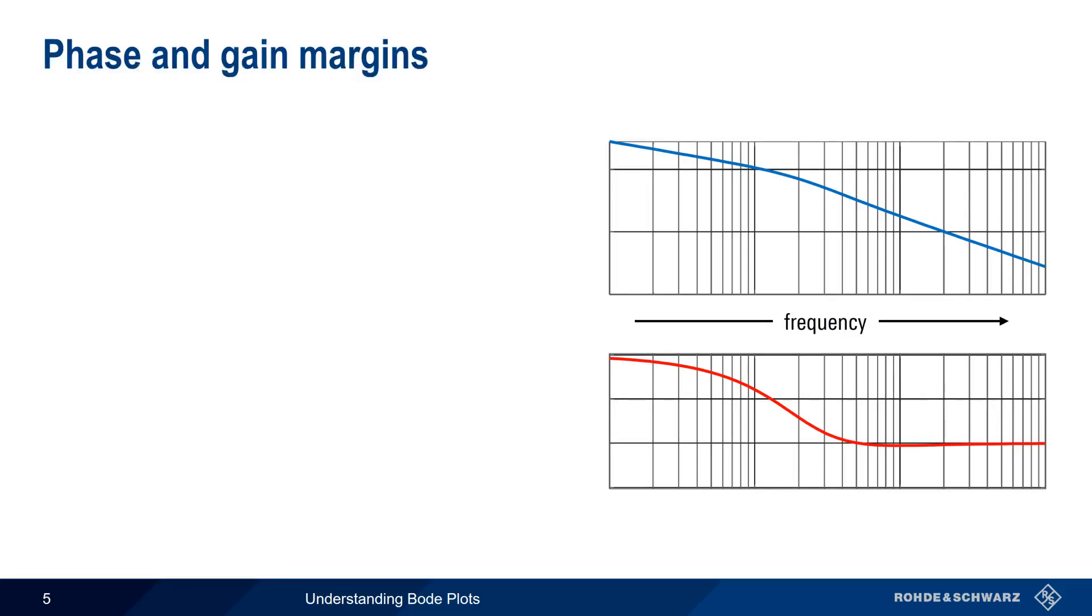We can use the information in a Bode Plot to quantify the stability of a feedback system, and this is done using so-called phase and gain margins. Phase margin is measured at the frequency where the gain equals 0 dB. This is commonly referred to as the crossover frequency.